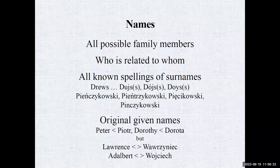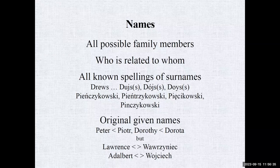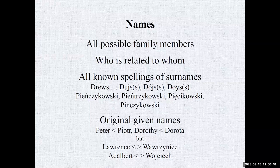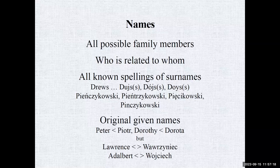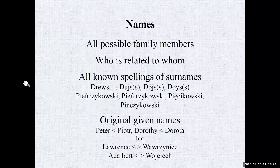First names also change. Some translations are easy: Peter is Piotr, Dorothy is Dorota. But who would think that Lawrence translates to a Polish name, or that Adalbert is its Polish equivalent? If an ancestor has an English-sounding name, research what it is in Polish — because going back in records you'll need to search for the Polish or Latin form. Lawrence could be Laurentius in Latin. Adalbert would likely be Albertus in Latin.